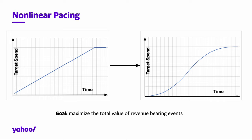A linear function means a steady spending rate throughout the day. Mystique updates the target spend based on the spending patterns of the ad, transforming it into a non-linear curve.